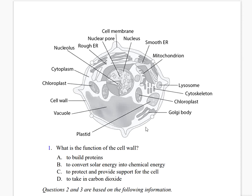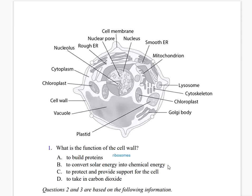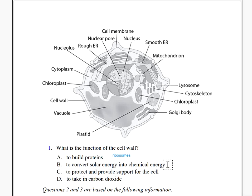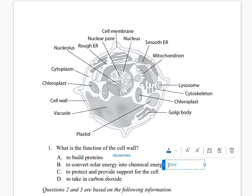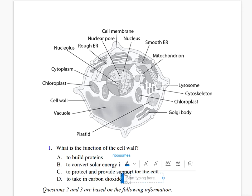We have here a diagram of a cell. What is the function of the cell wall? It does not build proteins — that is the function of the ribosome. It does not convert solar energy to chemical energy — that's the function of the chloroplast. It may protect and provide support for the cell, and it does not take in carbon dioxide. So the correct answer is letter C: it protects the whole cell and provides support.